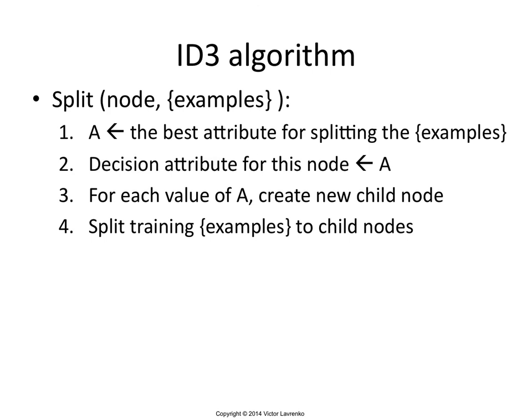The next thing you do is take your set of examples — the subset that was passed to you as input — and split them based on the value of the attribute you're working with. So you take all the rainy days and put them in the rainy child node, all the overcast into the overcast node, and all the sunny into the sunny node. You've split it into three sets.